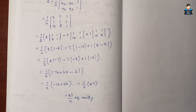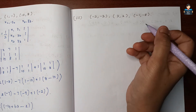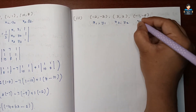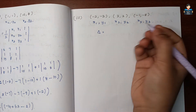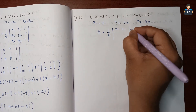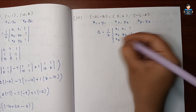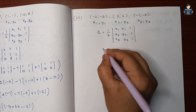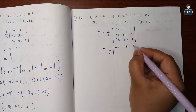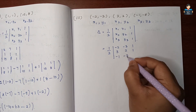Next is the third subdivision. We will find the area of the triangle. So x1 y1, x2 y2, x3 y3. Area of the triangle in terms of determinant: half times determinant of x1 y1 1, x2 y2 1, x3 y3 1. Here we substitute the values: 1 by 2 times determinant of minus 2, minus 3, 1; then 3, 2, 1; then minus 1, minus 8, 1.